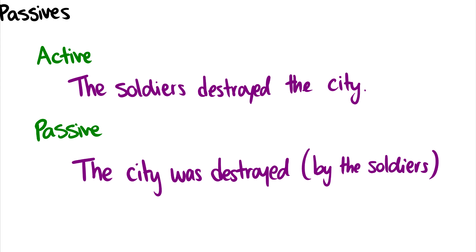In this video, we'll talk about passive constructions and how we draw them in X-bar theory. I haven't really shown any of these sentences before, but there are two different types of sentences. There's active sentences, like the soldiers destroyed the city, and there's passive sentences, like the city was destroyed by the soldiers.